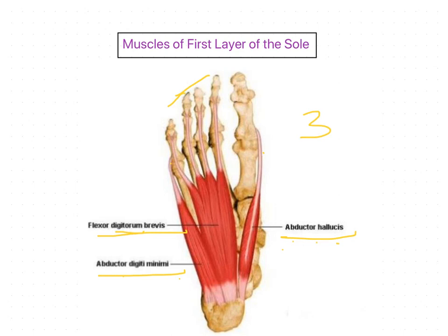The first muscle is the abductor hallucis. It originates from the medial tubercle of the calcaneum as well as the flexor retinaculum. This muscle is inserted into the medial side of the proximal phalanx of the great toe. It is supplied by the medial plantar nerve, which is the terminal branch of the tibial nerve. As the name indicates, it abducts the great toe away from the second toe.